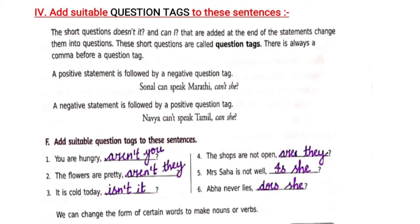Next, we are going to revise the question tags. The shortened questions added to the end of statements are called question tags — short questions like can't it, isn't it, doesn't it, which change statements into questions. There is always a comma before a question tag.